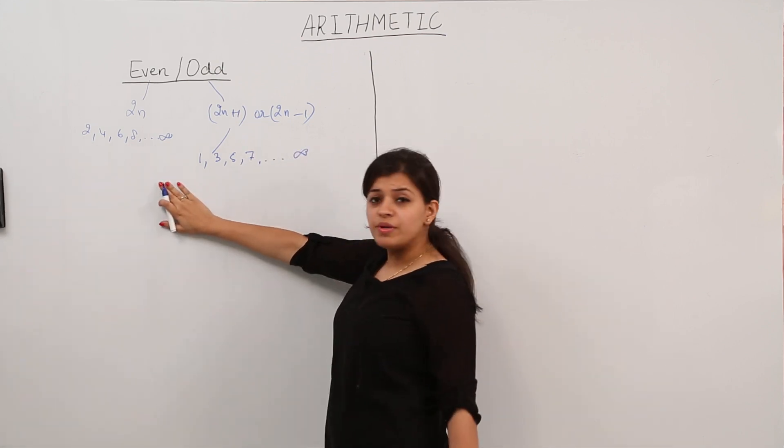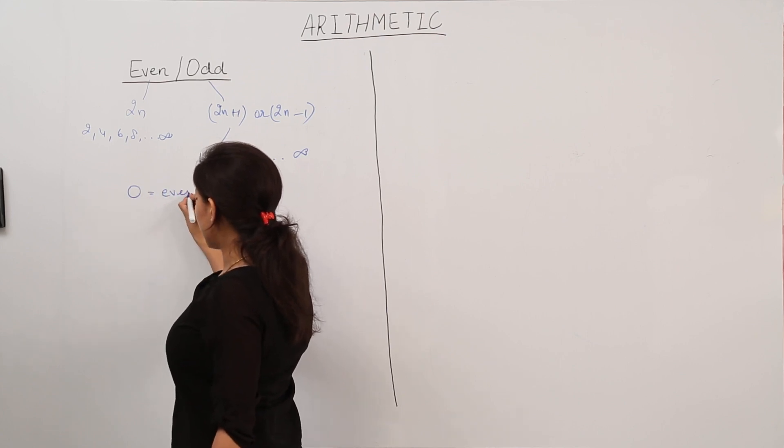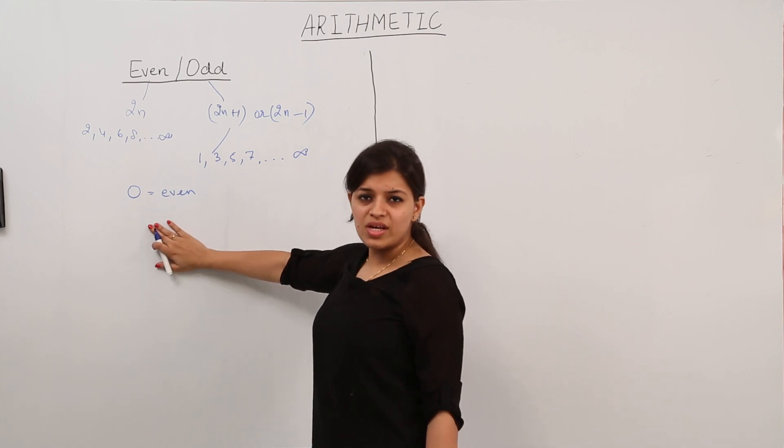Now one thing that should be noted is that 0 is an even number because when we divide 0 by 2, the remainder is 0.